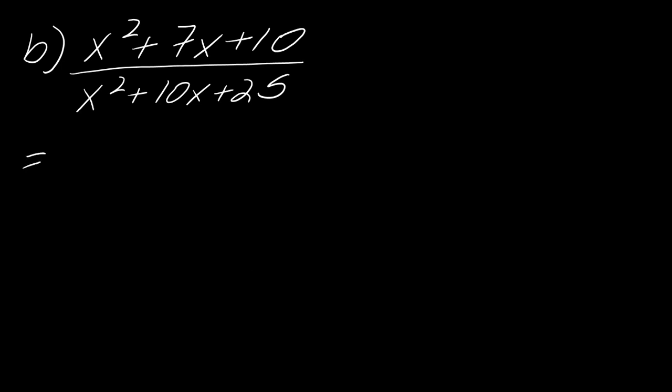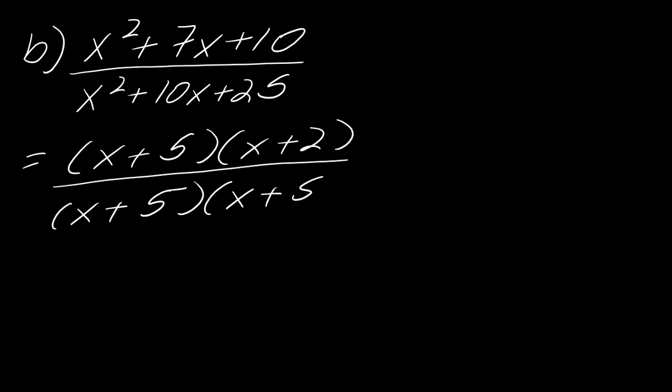So starting with b here, as I factor this, the top will factor as x plus 5 and x plus 2, and the bottom will factor as x plus 5 times x plus 5. So now I can cancel out one of those factors of x plus 5. So my answer here will just be x plus 2 over x plus 5.